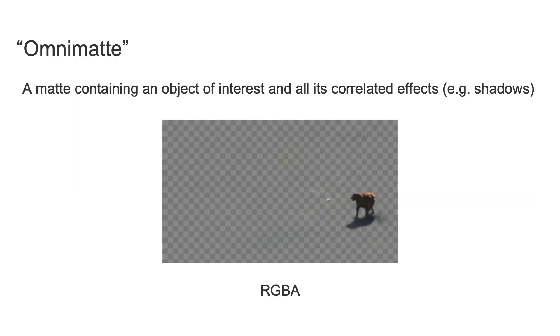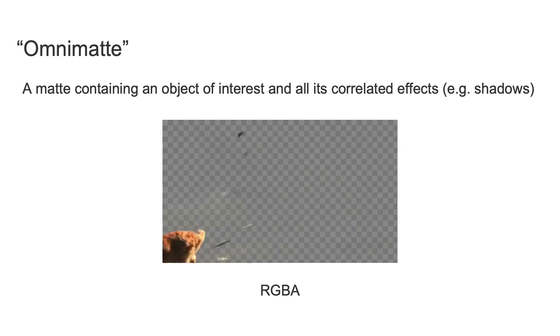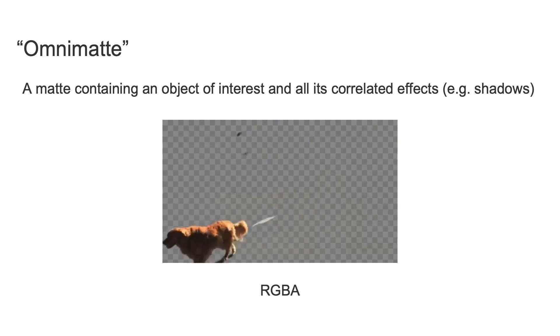We call this output layer an omnimat and define it as a mat containing an object of interest and all its correlated effects such as shadows, reflections, or attached objects.